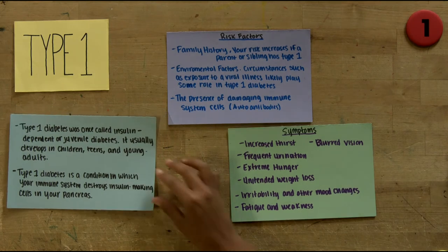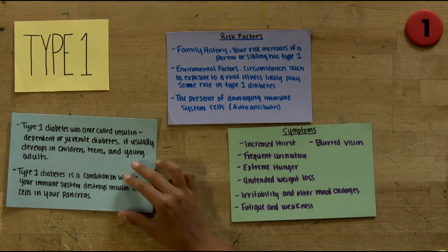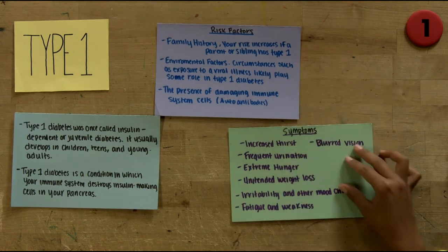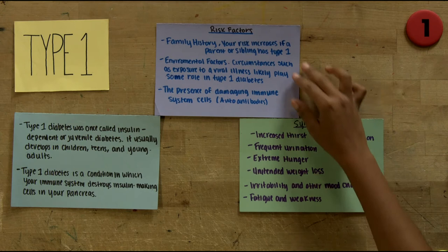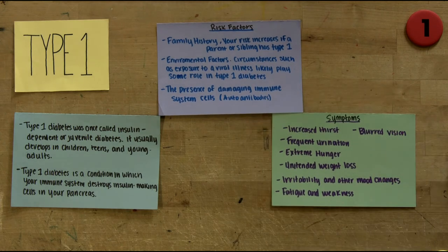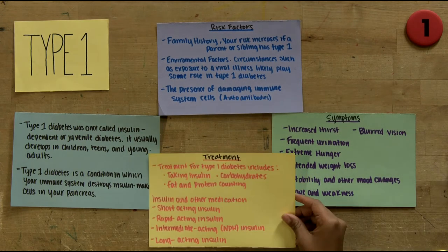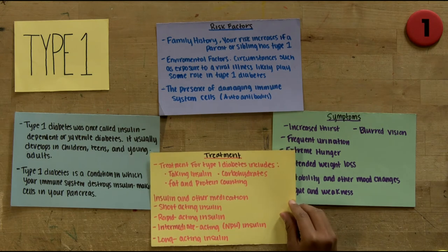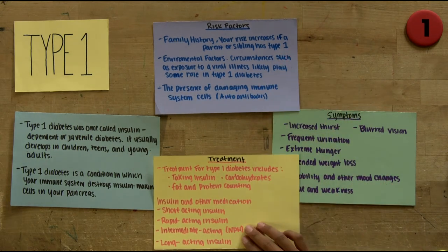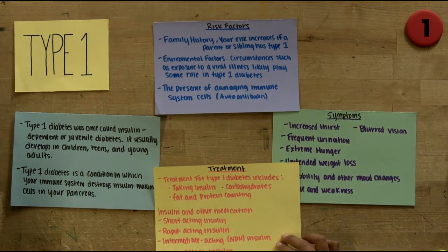Symptoms of Type 1 diabetes include increased thirst, frequent urination, extreme hunger, unintended weight loss, irritability and other mood changes, fatigue and weakness, and blurred vision.